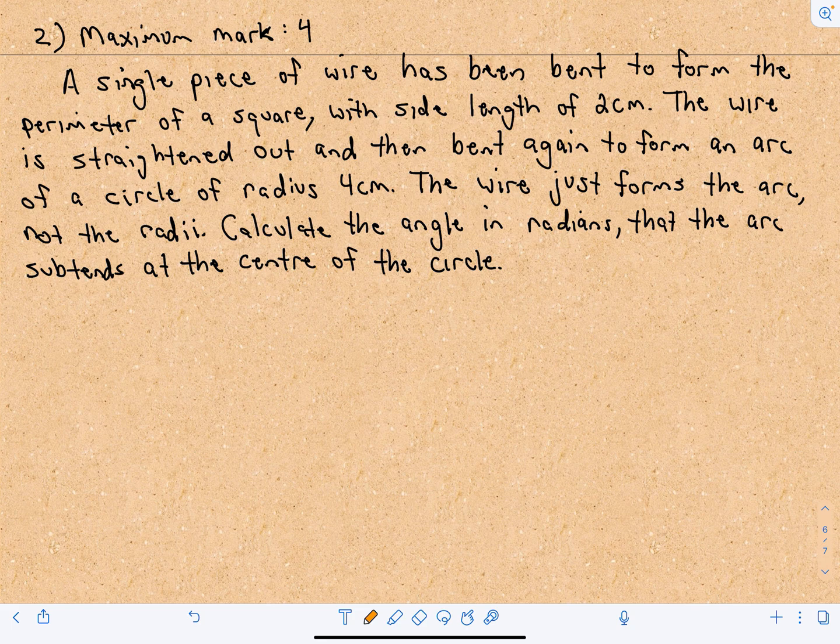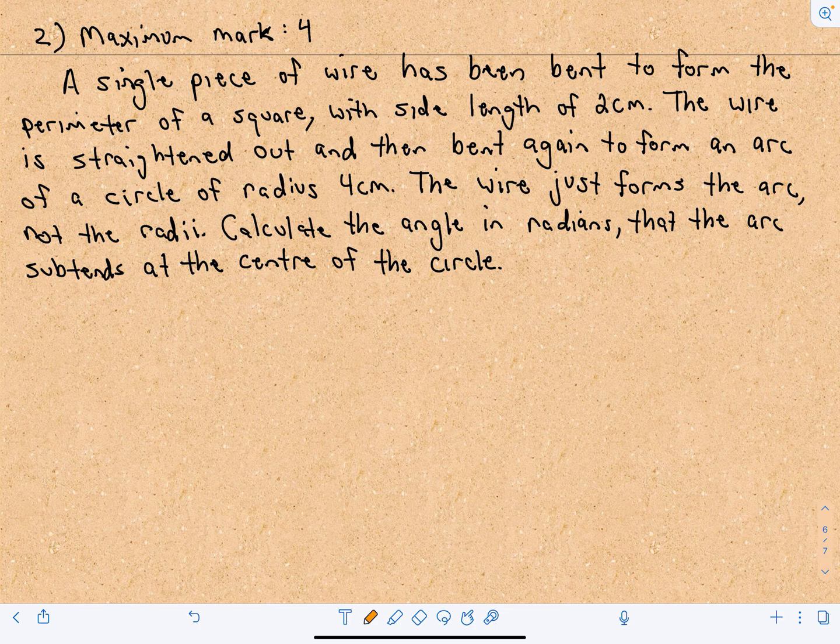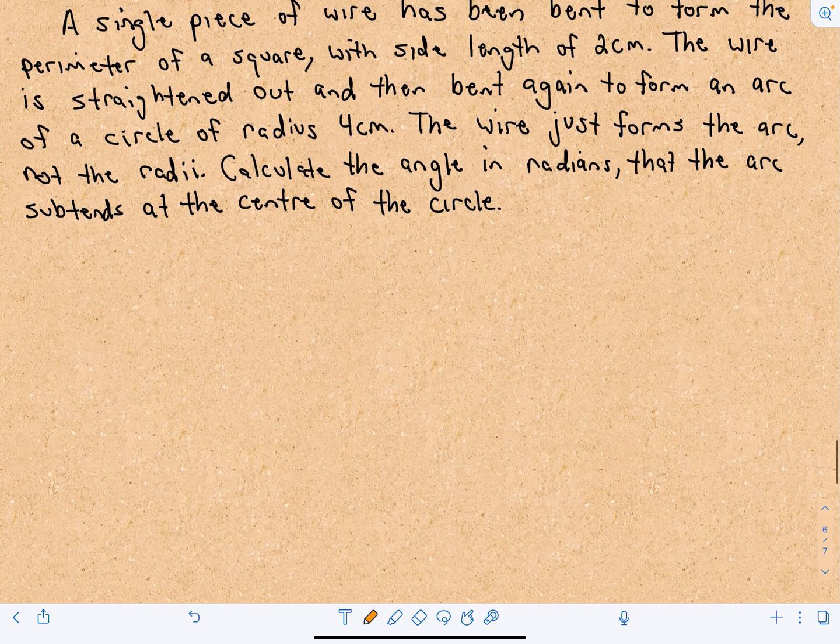The wire just forms the arc, not the radii. We want to calculate the angle in radians that the arc subtends at the center of the circle.